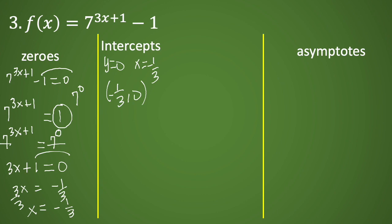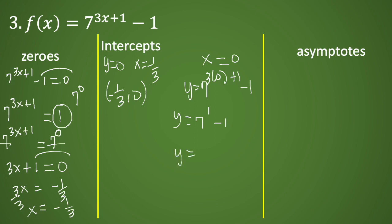To find the y-intercept, we let x equal to zero. We have y equals seven raised to three times zero plus one, minus one. Seven raised to the first power is seven, minus one gives us y equals six. If x is zero, y is six. For the asymptotes, our k is negative one, so the horizontal asymptote is y equals negative one.